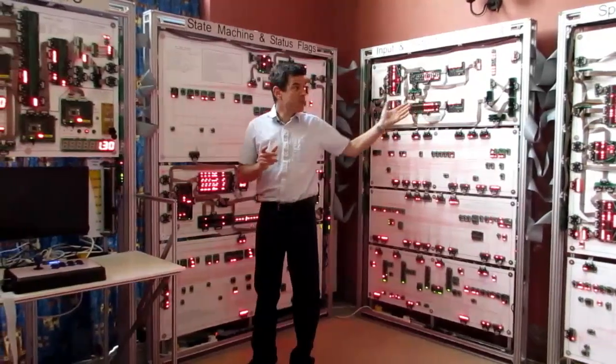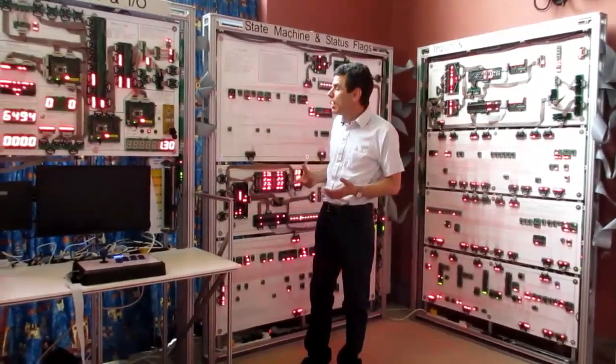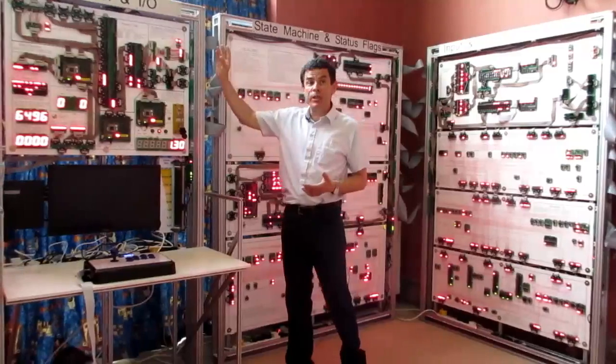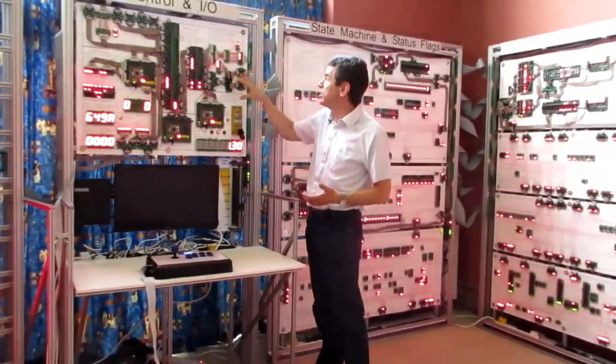So these five frames so far form the main body of the processor, and here we start to move into the outside world. This region up here is the external interface.